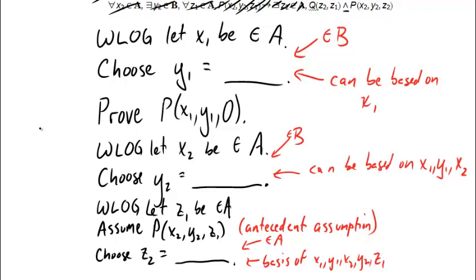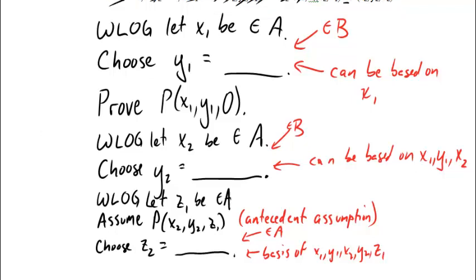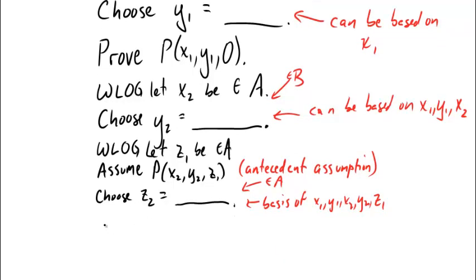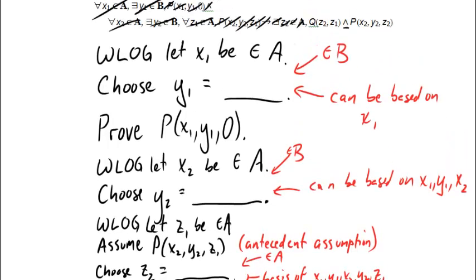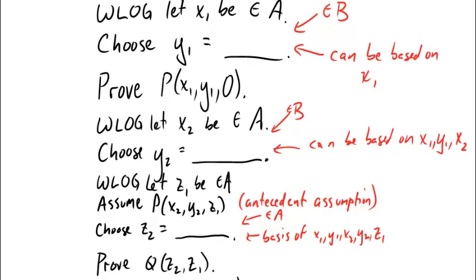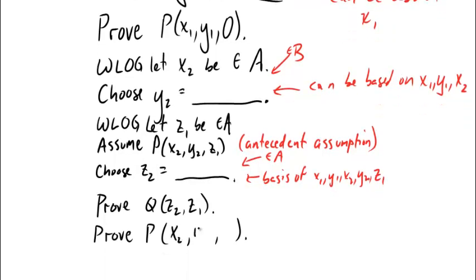Everyone help Steve out remembering what these are. Say Q of Z2, Z1. Are you saying that to your screen? Here we go. Prove Q of Z2, Z1. And I know you're telling me what the other thing is right now, but I can't hear you. It's a P, and it's got three parts. And X2, Y2, Z2. Okay. There we go.